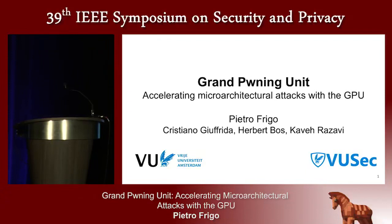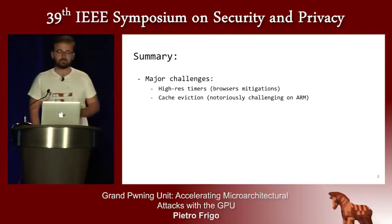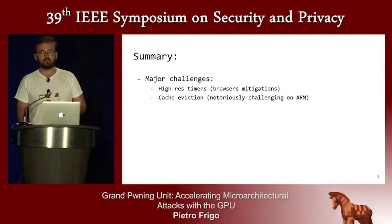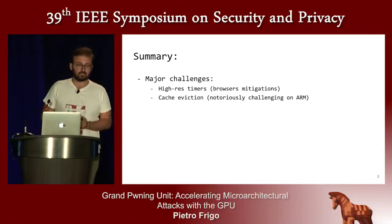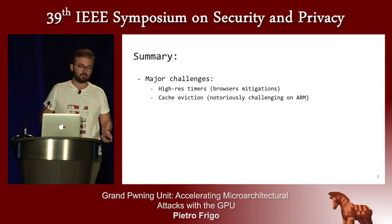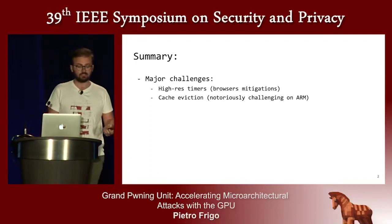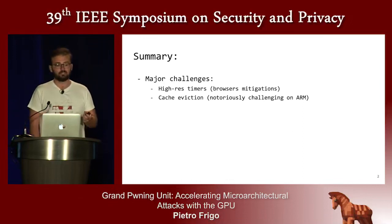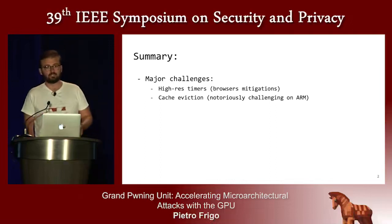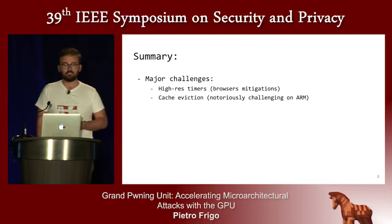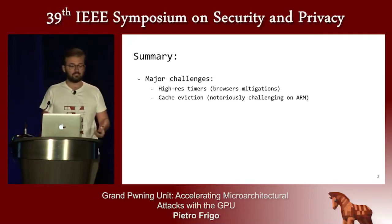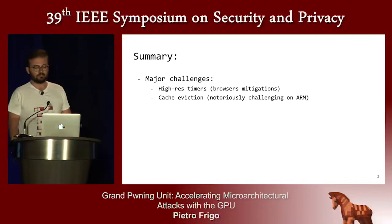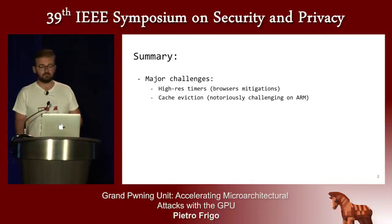We started by looking at microarchitectural attacks from the web, and the first thing we looked at was what are the major challenges in implementing this kind of attacks. When we say microarchitectural attacks we mainly mean rowhammer attacks and side channels. The major challenges when mounting these from the web are high-resolution timers and cache eviction in the case of rowhammer attacks. High-resolution timers were available in the past from the web, but due to previous attacks browser vendors disabled them. Cache eviction has always been a big problem because it's quite difficult to reach DRAM without having a CLFLUSH instruction, and this is an even bigger problem on ARM platforms because there is no proof of a rowhammer attack from JavaScript.